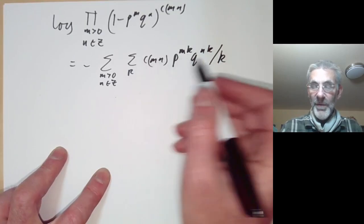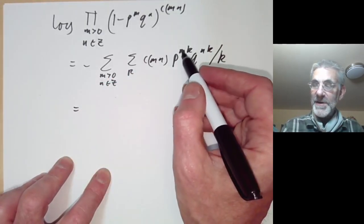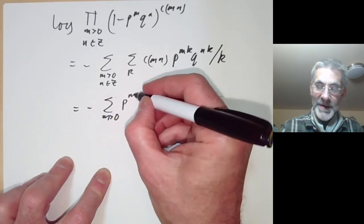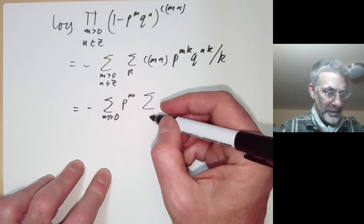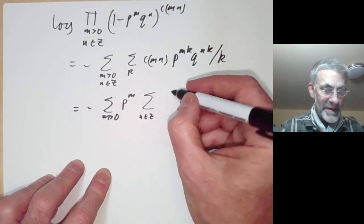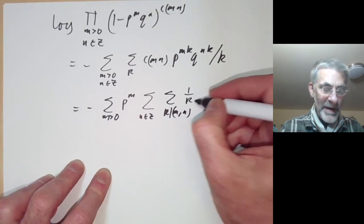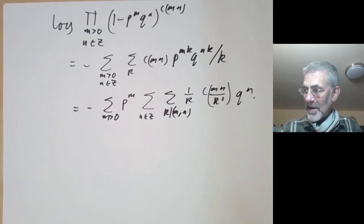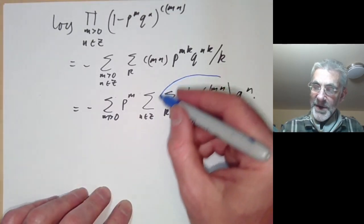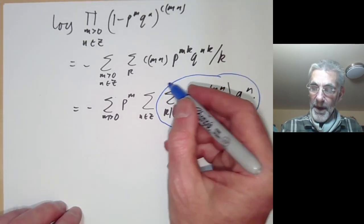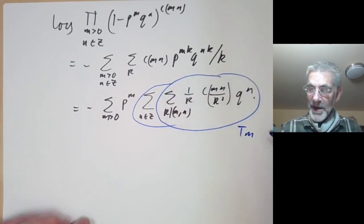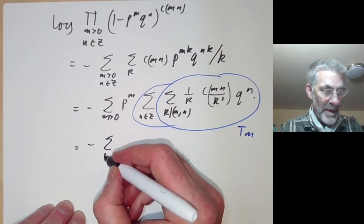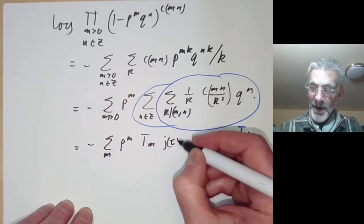Rearranging by replacing mk and nk by m and n, we get minus the sum over m > 0 of p^m times: the sum over n ∈ ℤ, and k dividing both m and n, of (1/k) · c(mn/k²) · q^n. If you were paying attention during the last sheet, you notice this is exactly the formula for the Hecke operator T_m applied to j - 744. So this sum becomes: minus ∑_{m>0} p^m · T_m(j(τ) - 744).